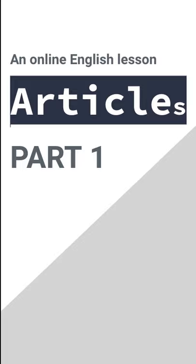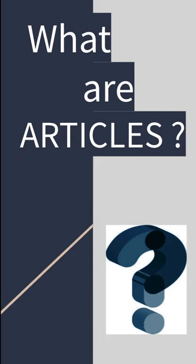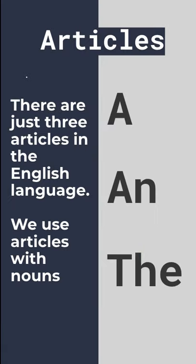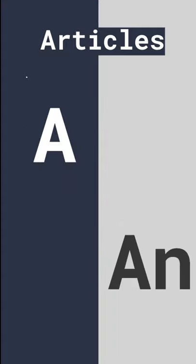Welcome to this short grammar video about articles. This is part one. What are articles? Well, there are three articles in the English language: a, an, and the. We use them with nouns. In this video, part one, we're looking at a and an.